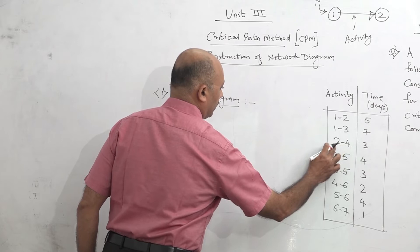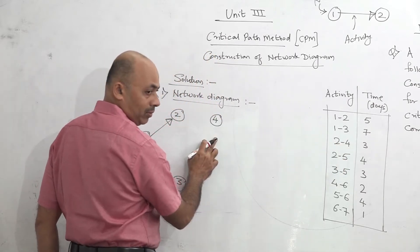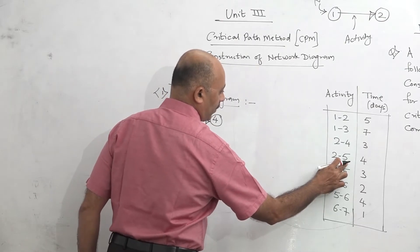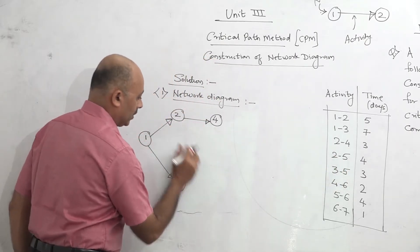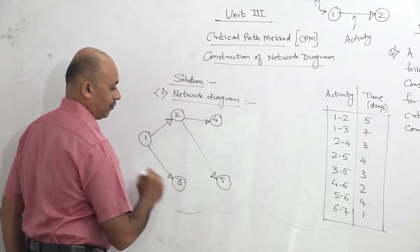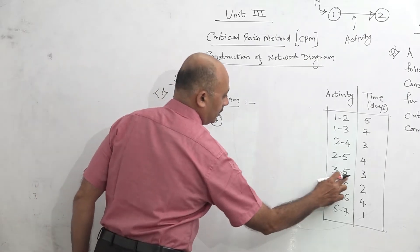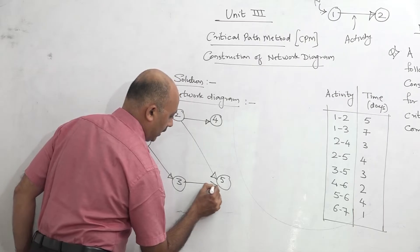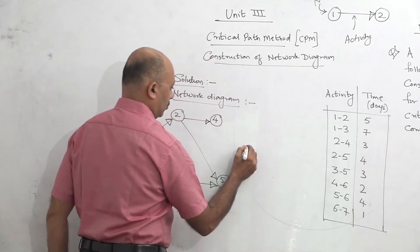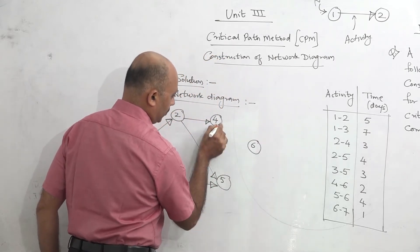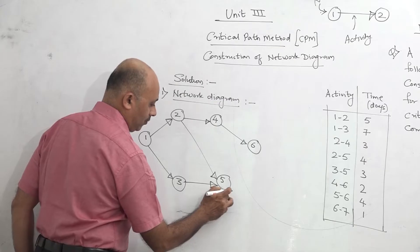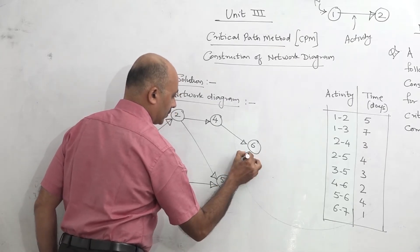From event 2, there is activity 2-4. So we draw event number 4 and join it — this is activity 2-4. The next activity is 2-5, also starting from event number 2. We take event number 5 and join it — this is activity 2-5. Then the next activity is 3-5, so from 3 to 5 we join this — activity 3-5. Then next is 4-6: we take event number 6 and join — activity 4-6. Then 5-6: from 5 to 6 we join — activity 5-6.